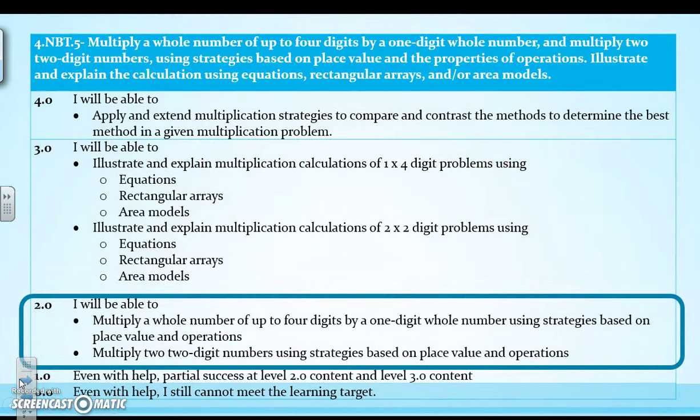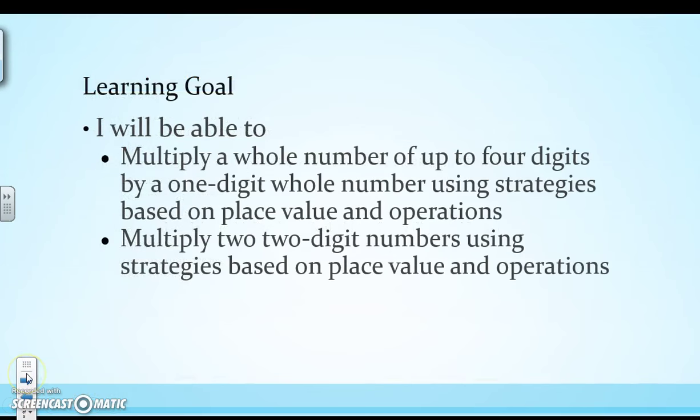So here's our learning scale. We're going to be working on level 2 of our learning scale today. And so our learning goal will be, I will be able to multiply a whole number of up to 4 digits by a 1-digit number using strategies based on place value and operations. You also will be able to multiply 2 by 2-digit numbers using strategies based on place value and operations.